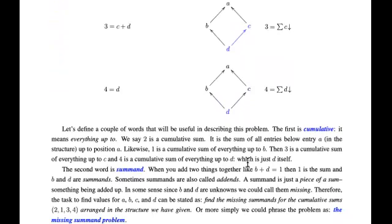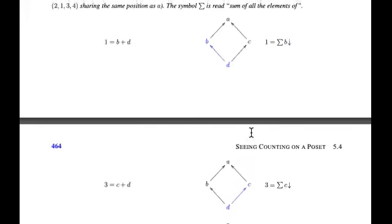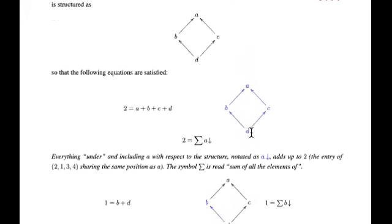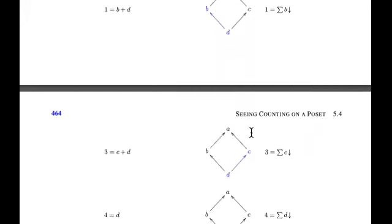Believe it or not, finding the solution to something like this is actually very useful in counting — at least the idea lends itself to counting ideas — if we're trying to count how many things there are in posets. Things can be arranged like numbers of factors, primitive bit strings of zeros and ones, or subsets. If what you're counting can be arranged in a poset, this basic problem-solving approach can be useful.